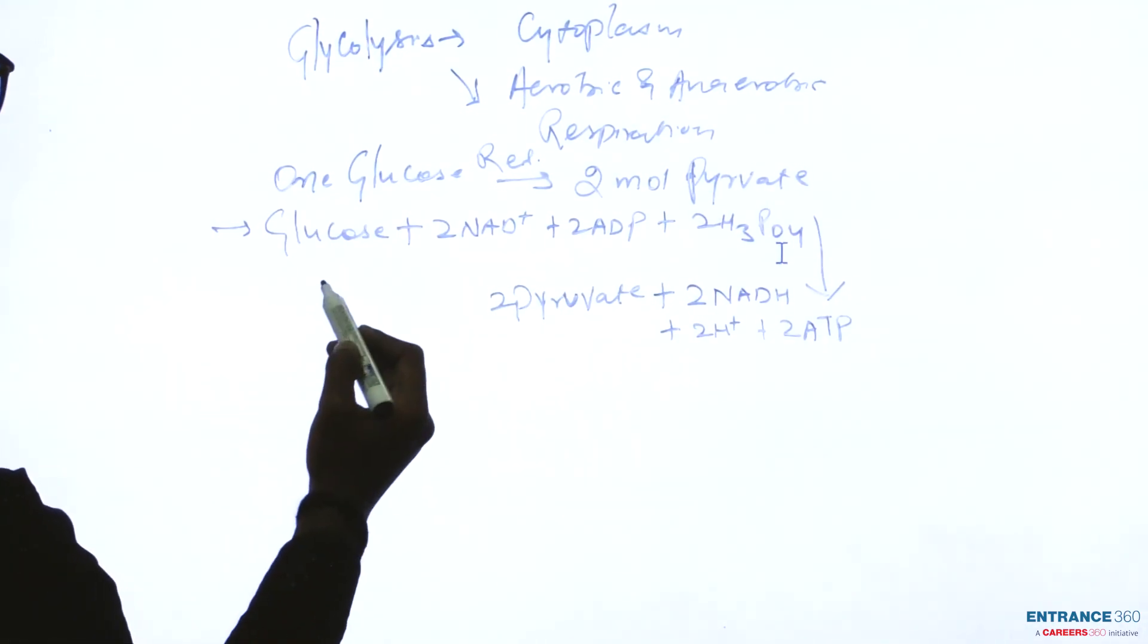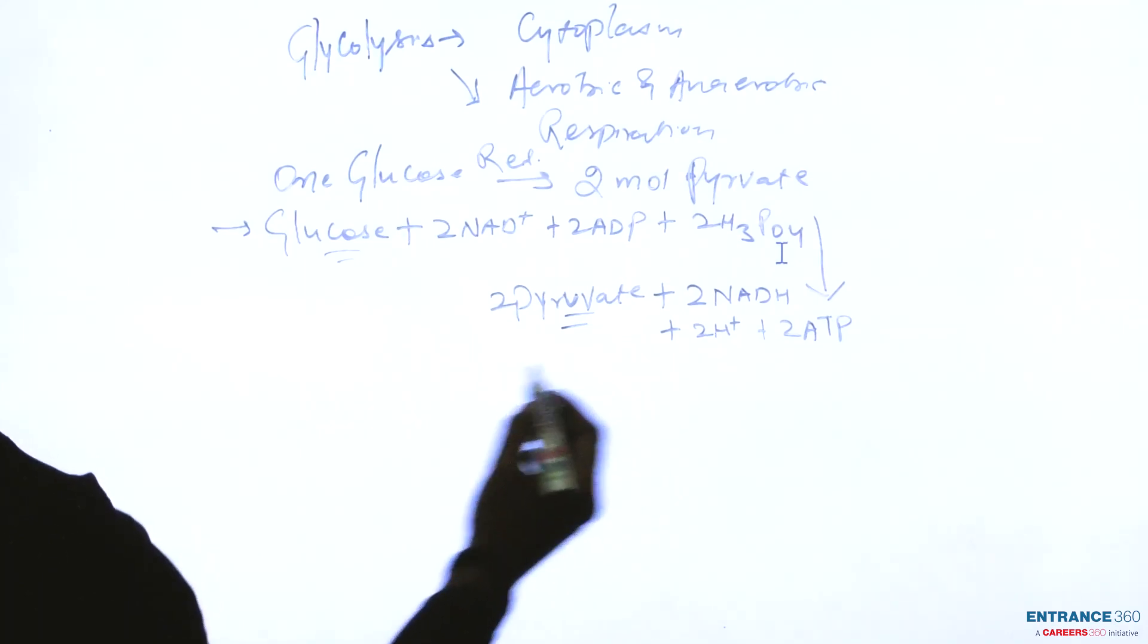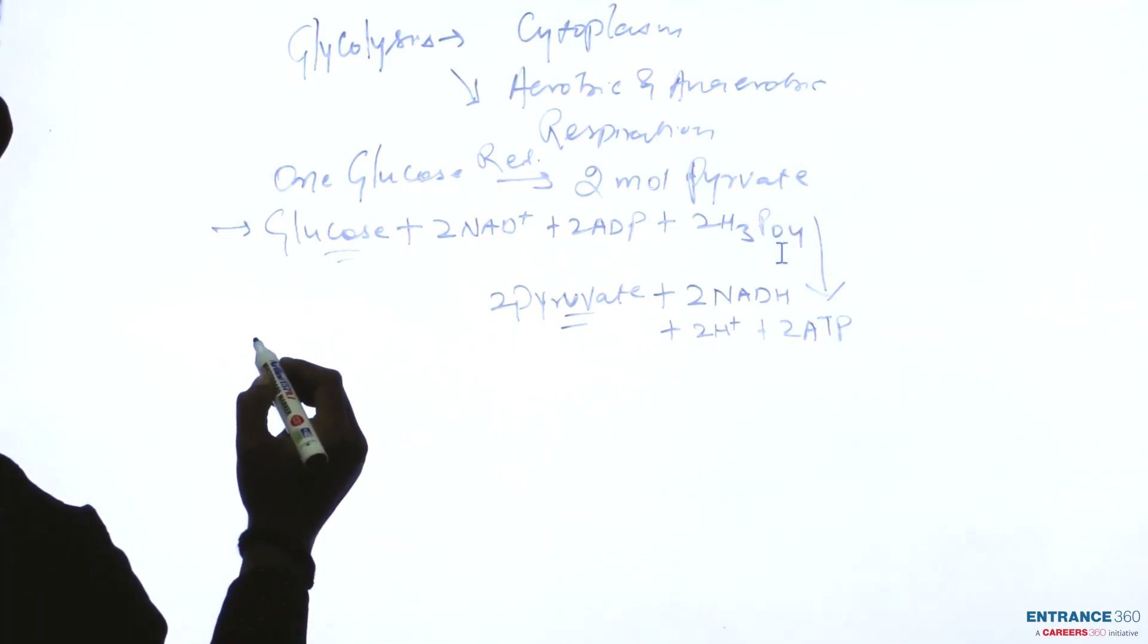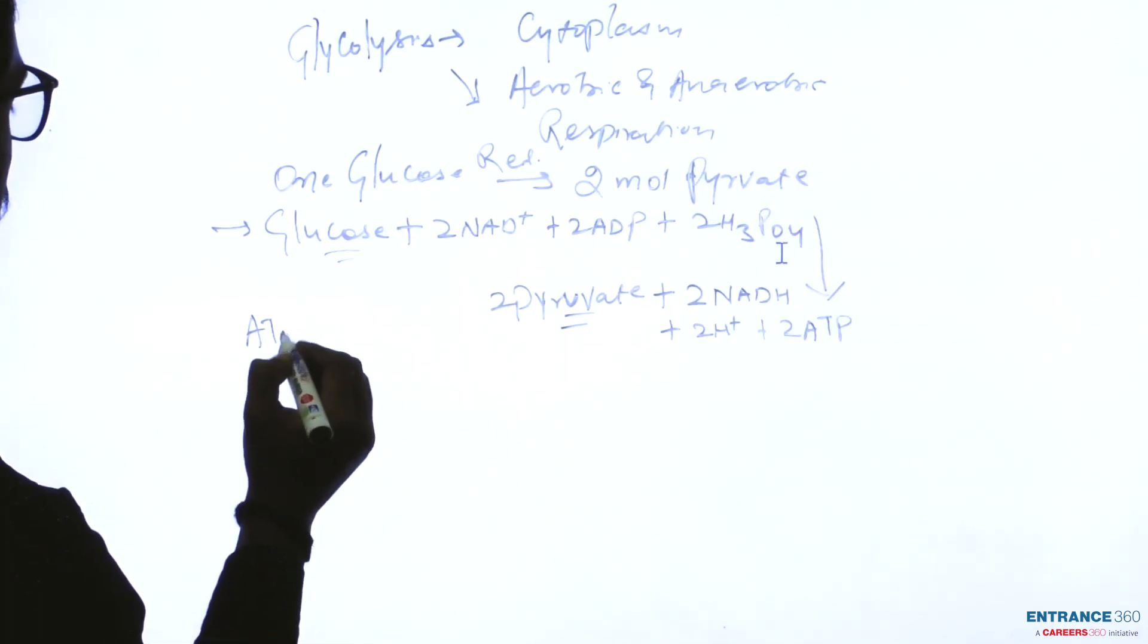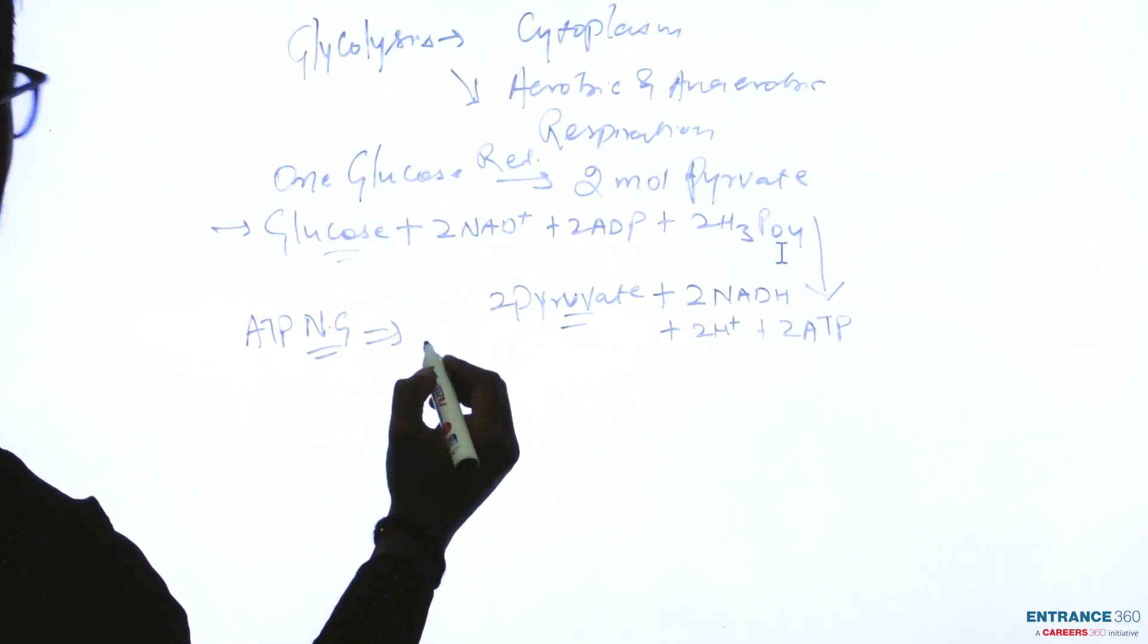So students, as we have the equation, one molecule of glucose will give two molecules of pyruvate. In this, the net gain will be 2 ATP.